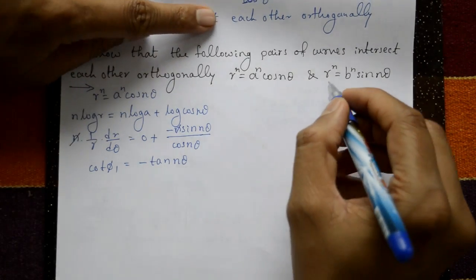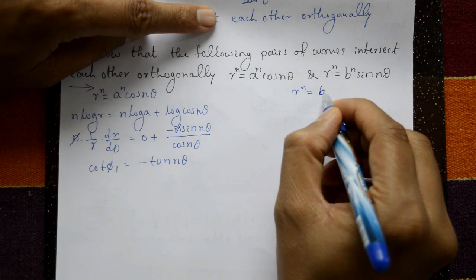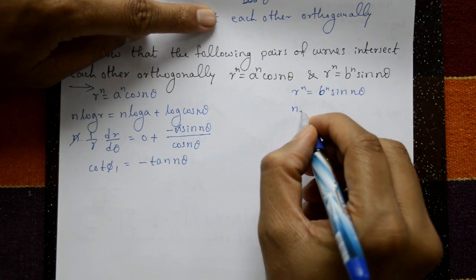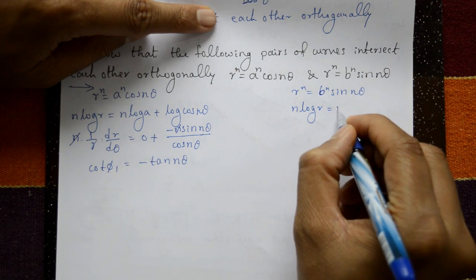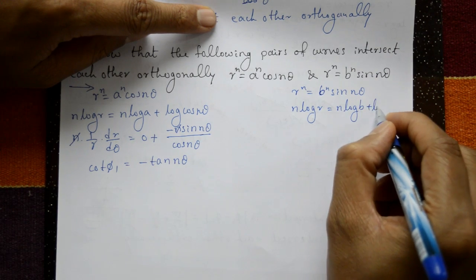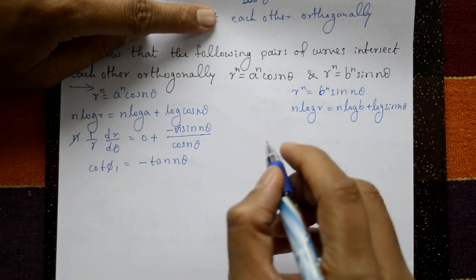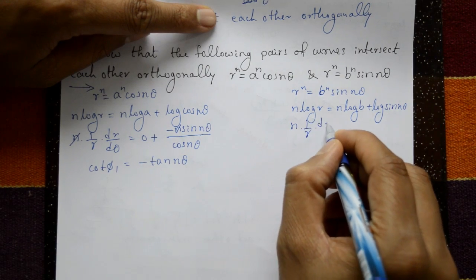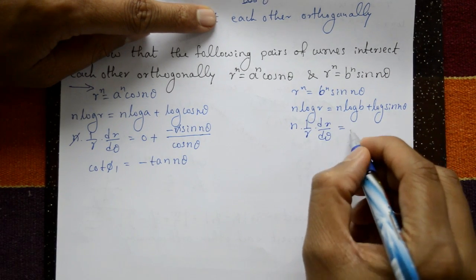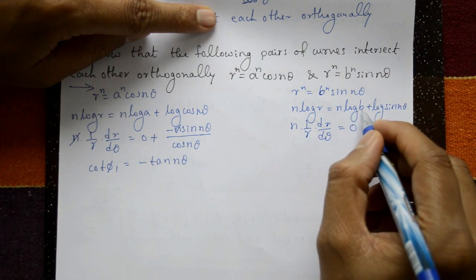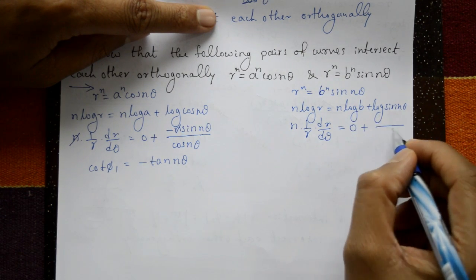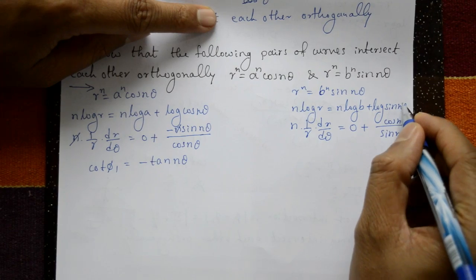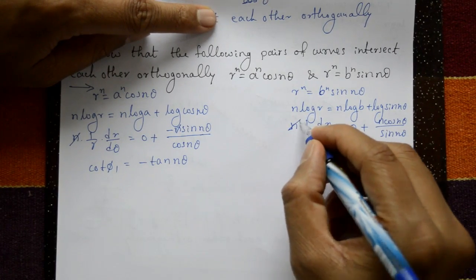For the second curve, r^n = b^n·sin(nθ). Taking log on both sides: n·log(r) = n·log(b) + log(sin(nθ)). Differentiating with respect to θ: n·(1/r)·(dr/dθ) = 0 plus (1/sin(nθ))·cos(nθ)·n.